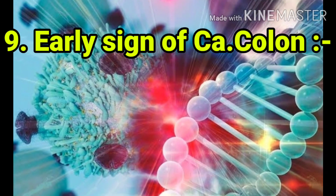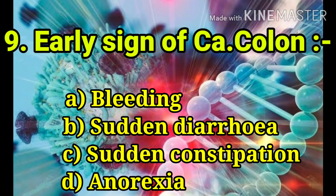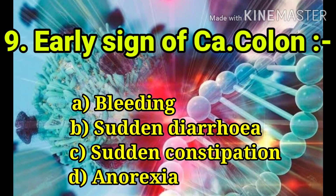The next question: early sign of CA colon. The options are bleeding, sudden diarrhea, sudden constipation, and anorexia.